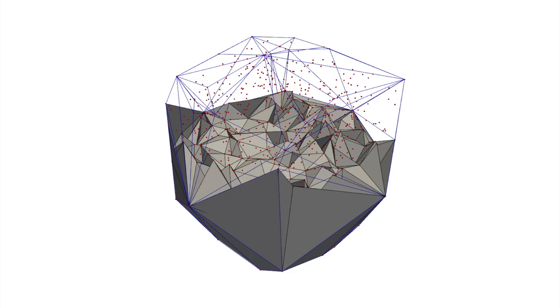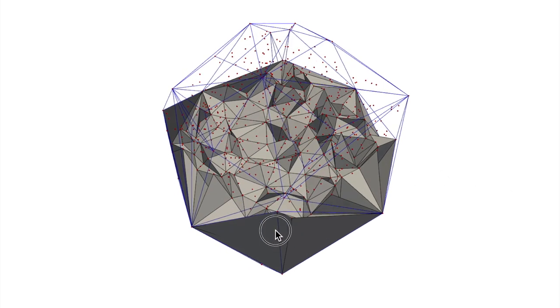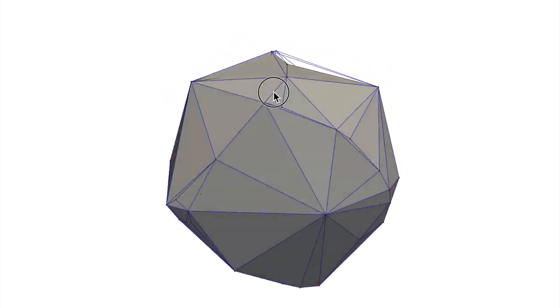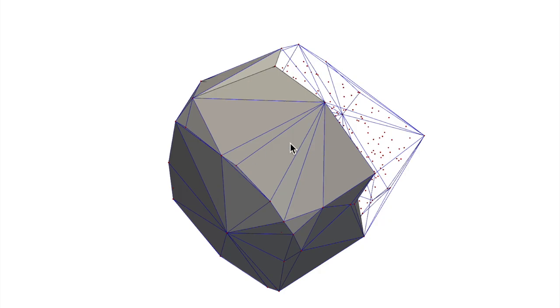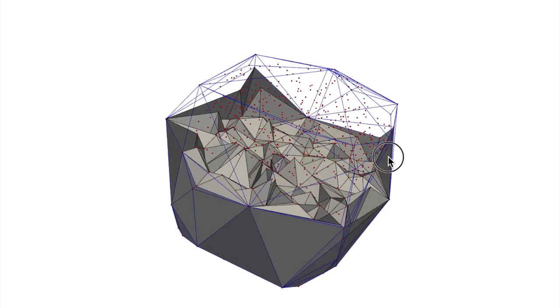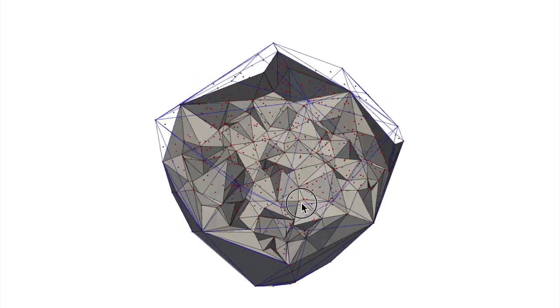And then at this step here, what I did is I sliced horizontally in the middle all the tetrahedra, and I removed all the ones that were above the plane, and then you can see that the interior of the tetrahedralization is formed of several Delaunay tetrahedra.